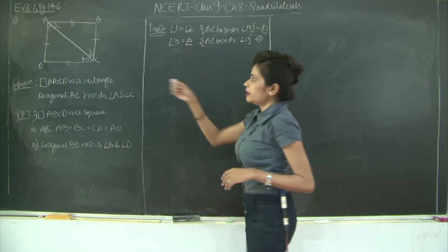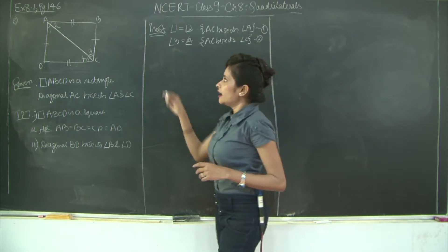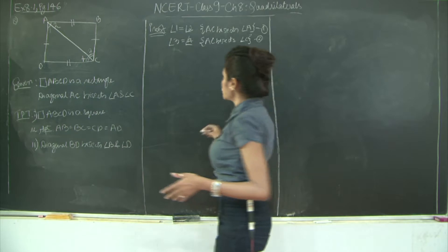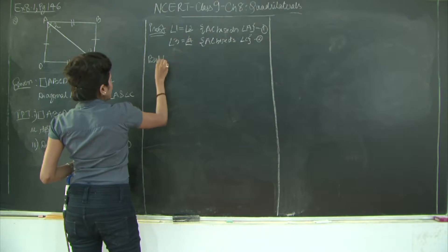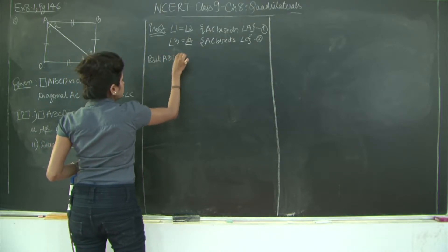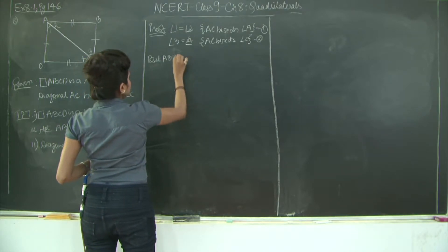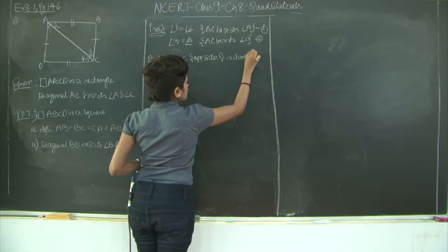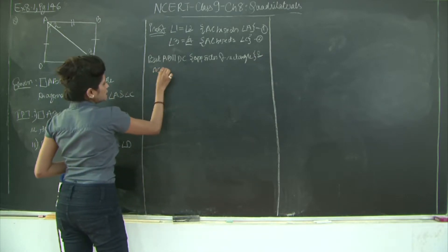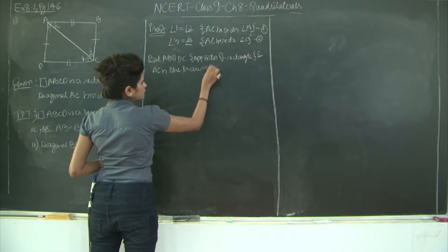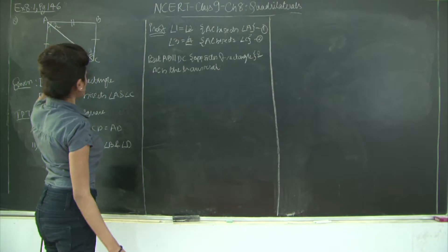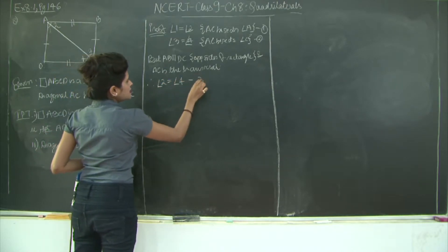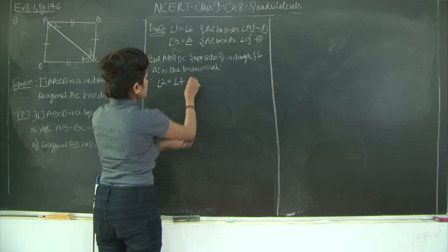Now, AB is parallel to DC because they are opposite sides of a rectangle, and AC is the transversal. Therefore, angle 2 is equal to angle 4 by the alternate angle theorem — you can see a Z forming here. Let's write this down and mark it as statement 3.